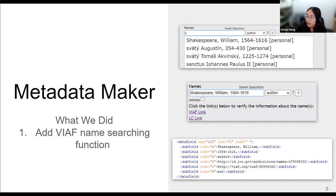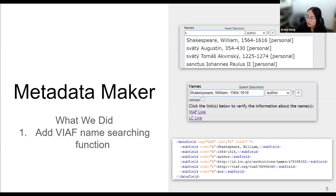Users can verify the name entity's information on either VIAF or LC NAF. We retrieve the name's 100 field subfield A to D values from LC NAF whenever they are available. If no LC URI is provided in VIAF, we use the preferred label from other name authority files that can be found in VIAF. The VIAF and LC URIs are added to the subfield 0 and 1 in MARC 100 field, and we also put the URIs in other supported formats in Metadata Maker as well.